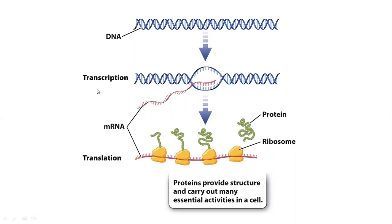RNA polymerase is basically directed to a specific place on DNA, it will melt that place, and then transcription occurs, which means messenger RNA is synthesized.